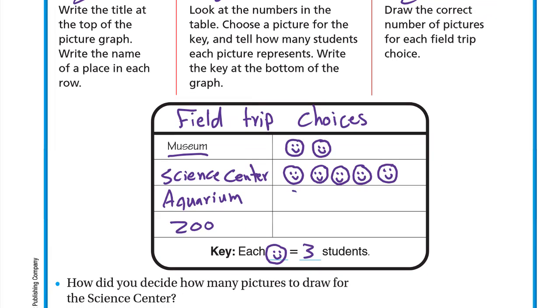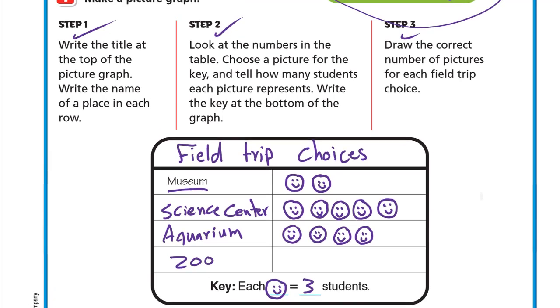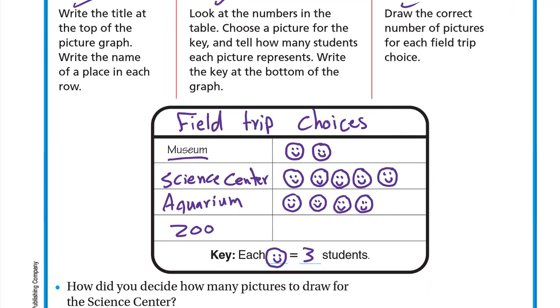The Aquarium is 12, so I'll draw: three, six, nine, twelve. That's four smiles. The Zoo is 9, so we'll draw: three, six, nine. That's three smiles.